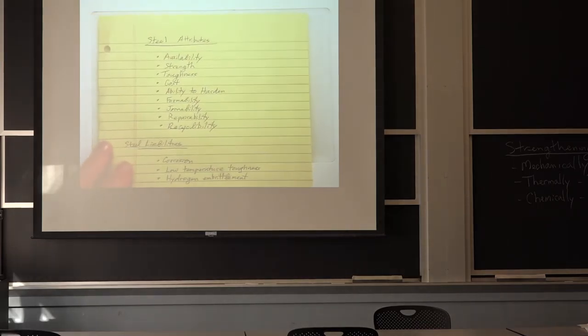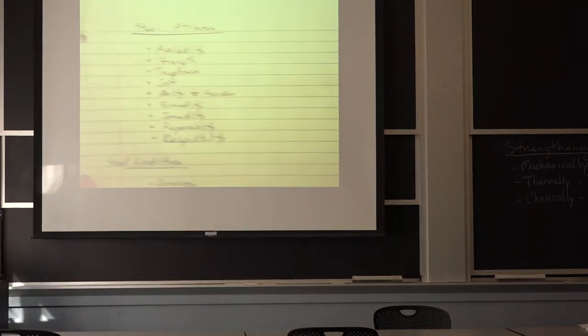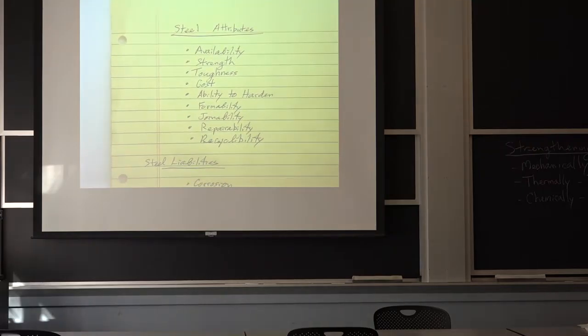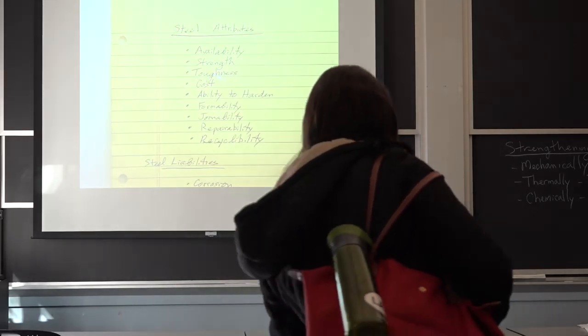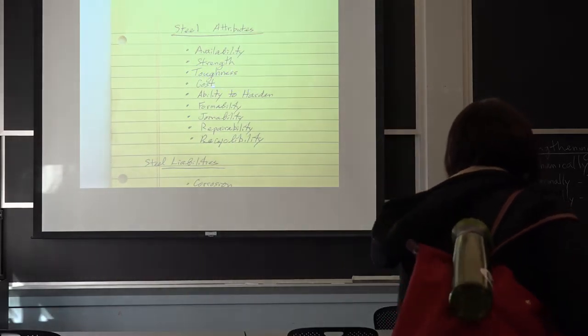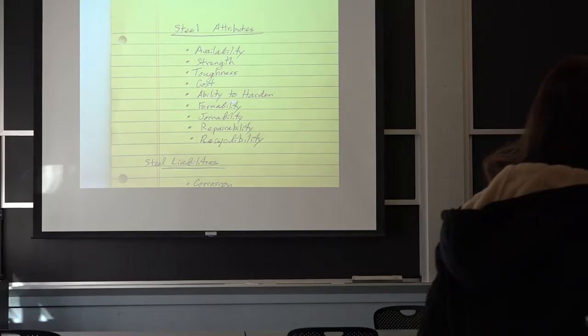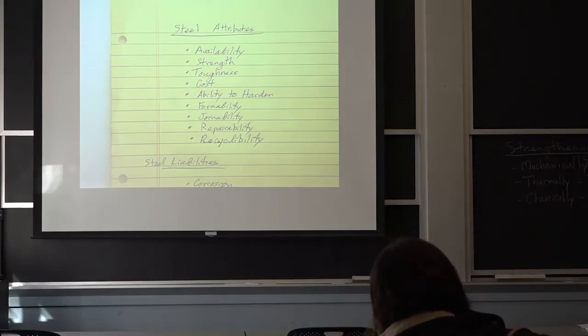My summary from yesterday, I didn't write on the board. We were talking about steels, and I didn't really go through all of this yesterday, but the strengths or the attributes of steel that make it in the billion-ton-per-year club are availability. There's plenty of iron ore around. It can have very good strength. It has very good toughness compared to materials as a whole.